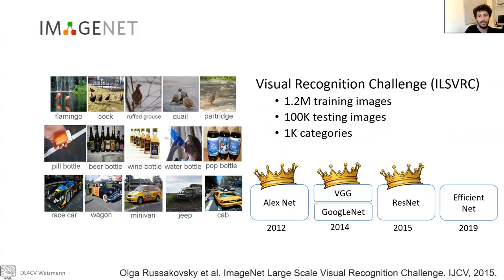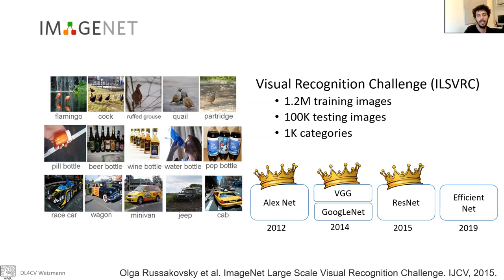What is the ImageNet classification challenge? ImageNet is a large dataset of images — around 14 million images. The visual recognition challenge, the ILSVRC, has around 1.2 million training images and around 100K testing images for 1,000 categories. It used to be an annual challenge. We're going to see three winners: AlexNet from 2012, which was the first neural network to win the challenge; VGG, which actually won second place but has a really nice architecture; and ResNet from 2015.